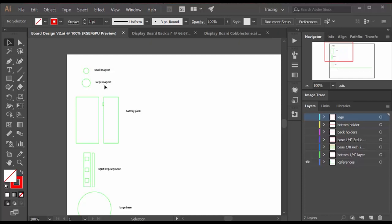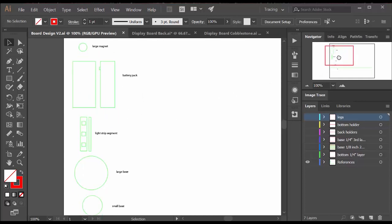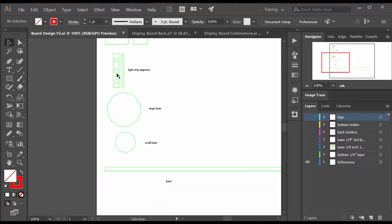My reference page for my structural drawing has the magnets in it. It has the battery pack both from the top and the side. It has the size of the light strip and the size of the bases of my army. Also the size of the acrylic pieces that I just designed.